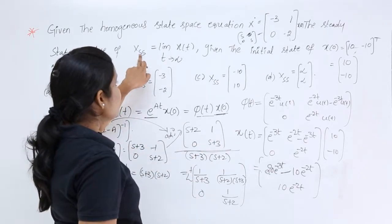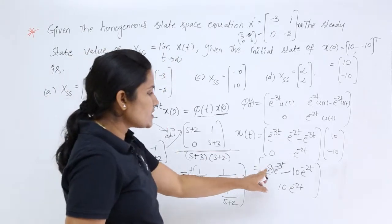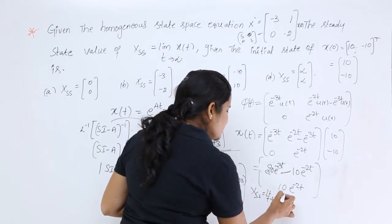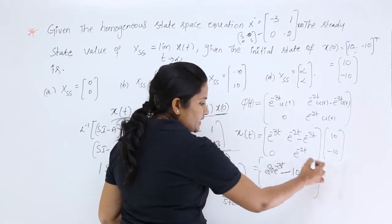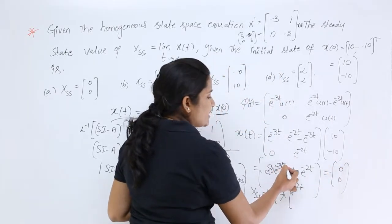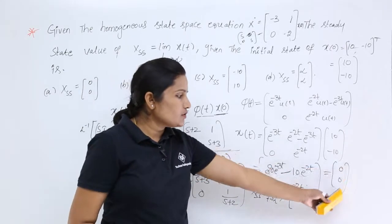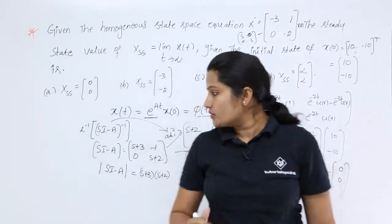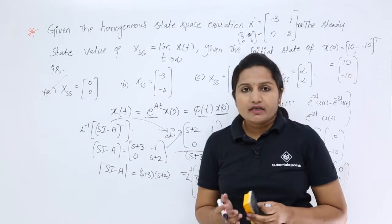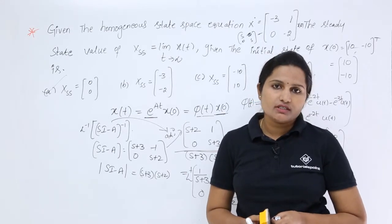Once we have x(t), to get x_ss we substitute t tending to infinity. So x_ss equals the limit as t→∞ of x(t). Substituting t→∞ in all terms: e^(-∞) = 0, so every term goes to zero. Therefore x_ss = [0; 0]. So the answer for this problem is x_ss is equivalent to [0, 0]. This is how we find the solution for homogeneous state equations as well as non-homogeneous state equations.